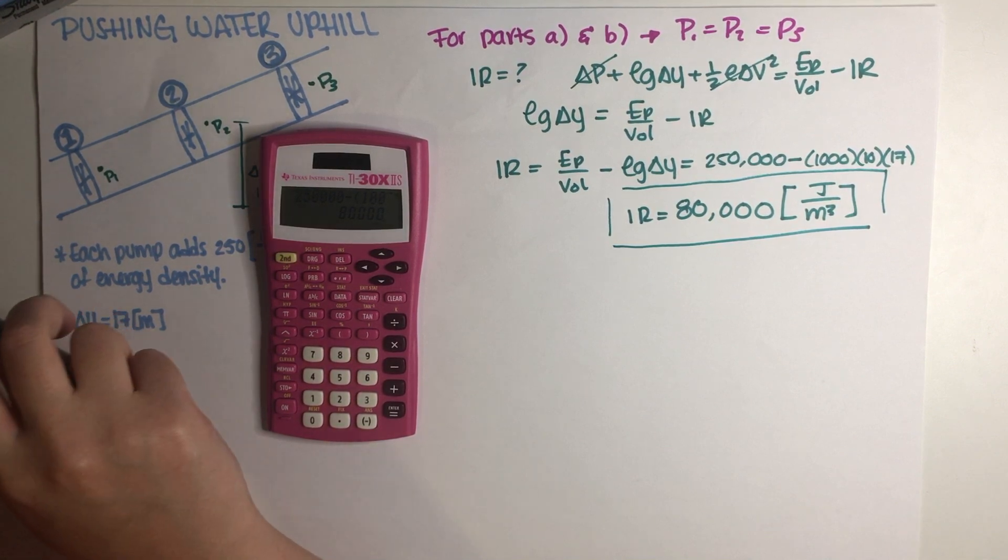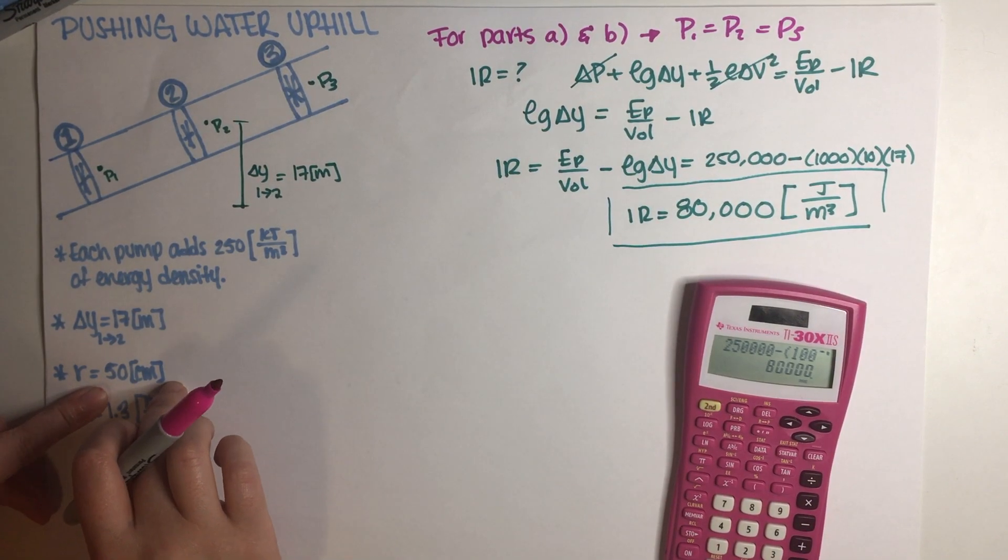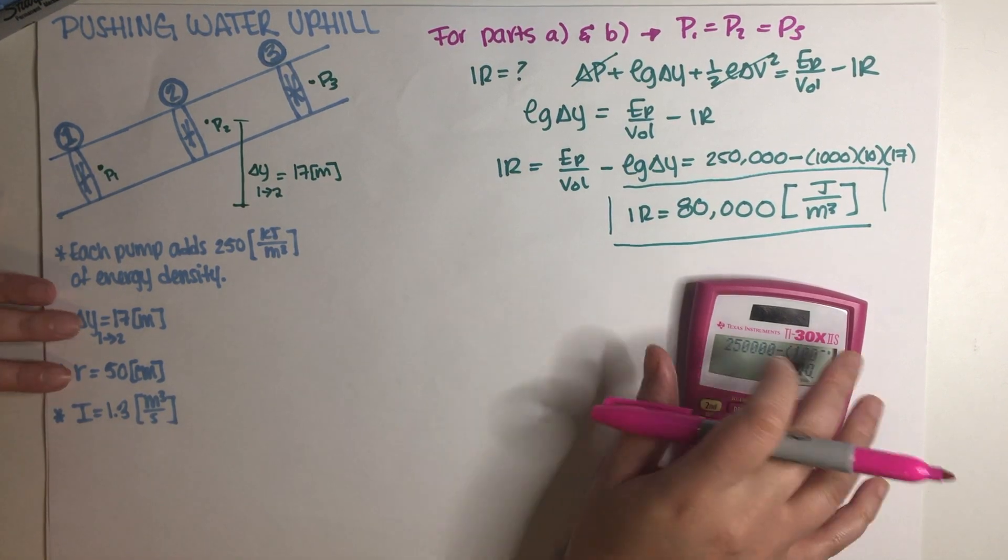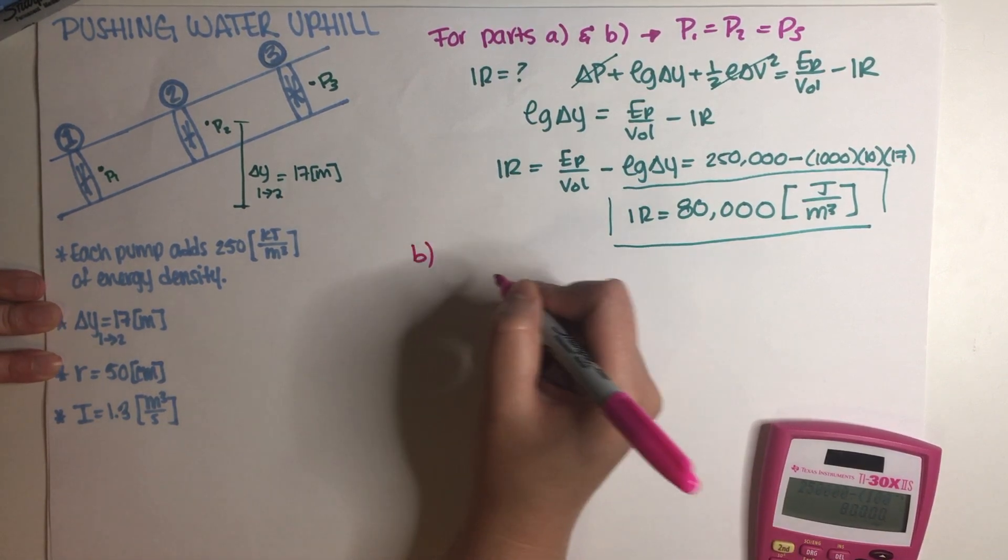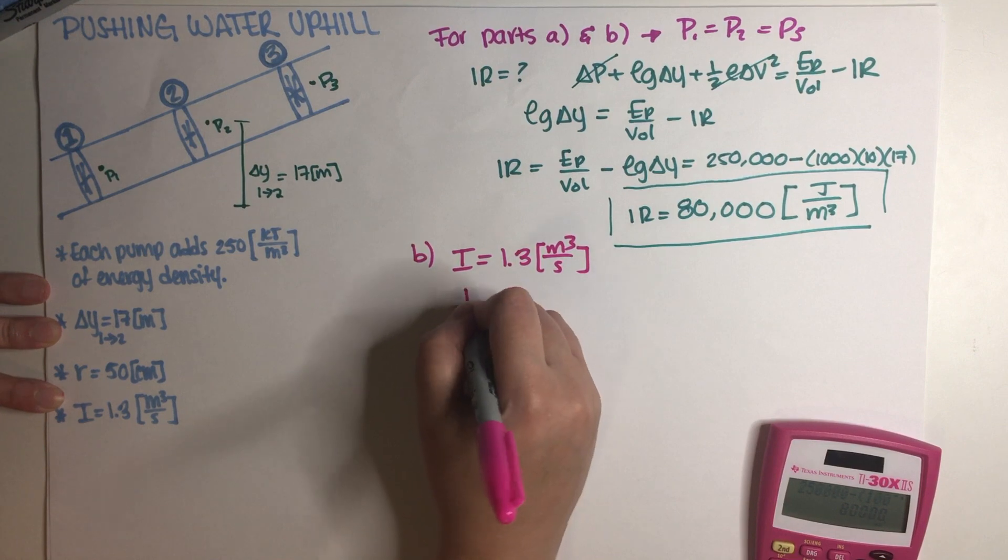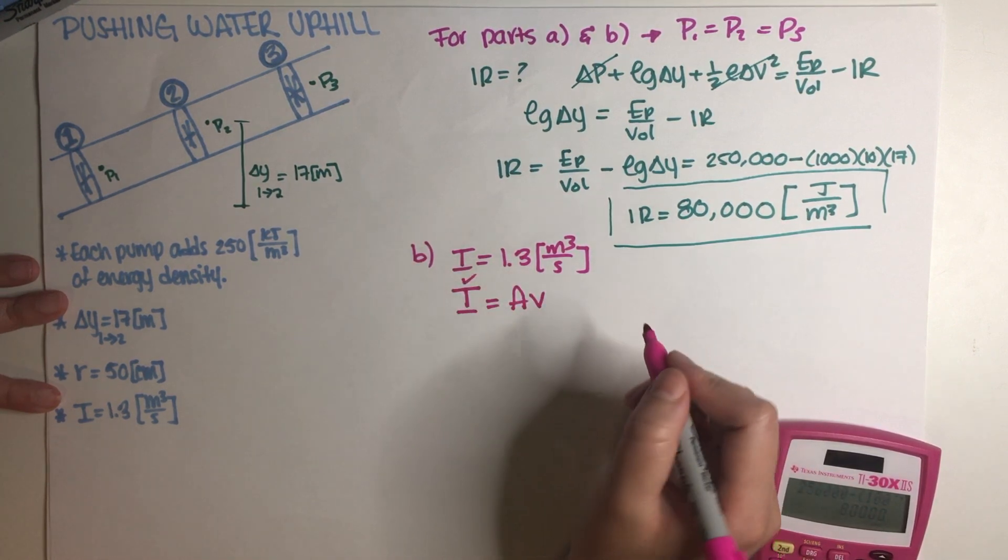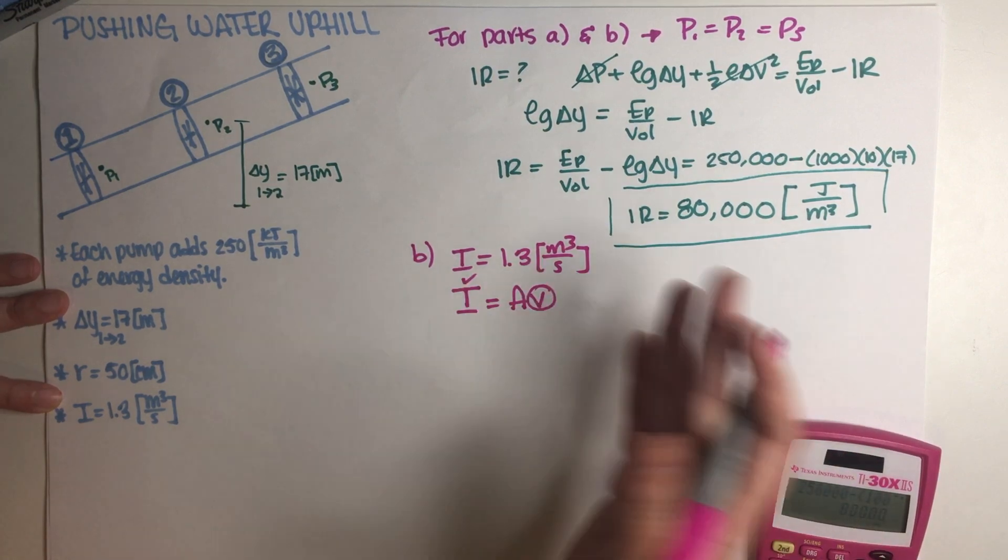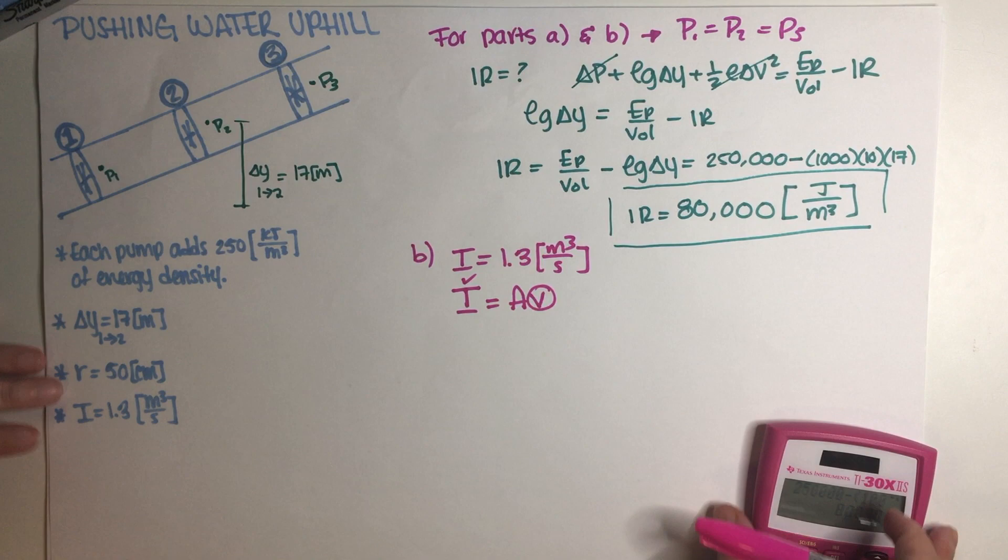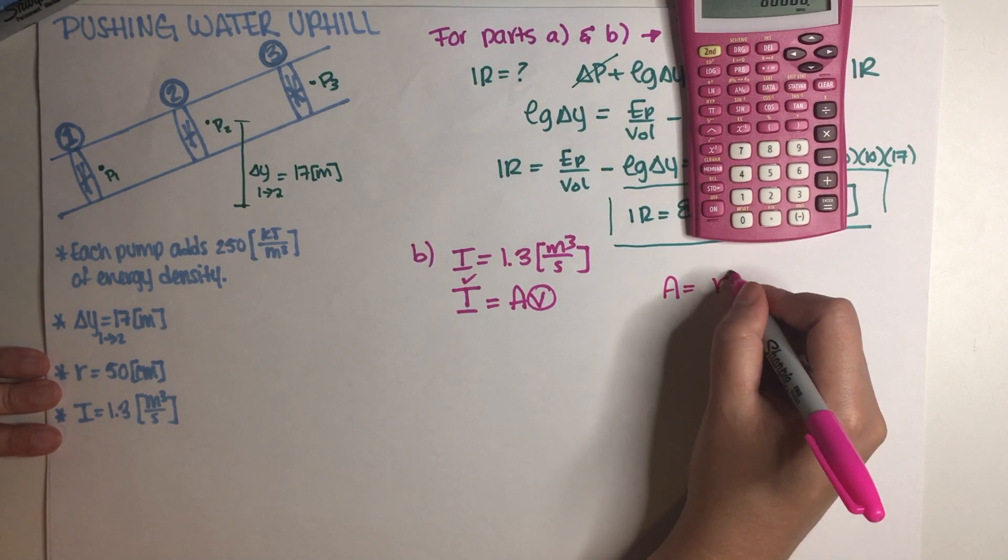So let's just go ahead and read part B. Part B says, the pipe has a circular cross section with a radius of 50 centimeters. If the total flow rate is 1.3 meters cubed per second, then what is the speed of the water in the pipe? So this one's kind of straightforward because we do have I and it's already in SI units. And we know that by definition, the definition that we use is area times velocity. So we already have this number and what we want is this velocity. We don't have the area but we do have a radius so we can basically work with the radius in order to get the area and then we would just have to solve for the velocity.